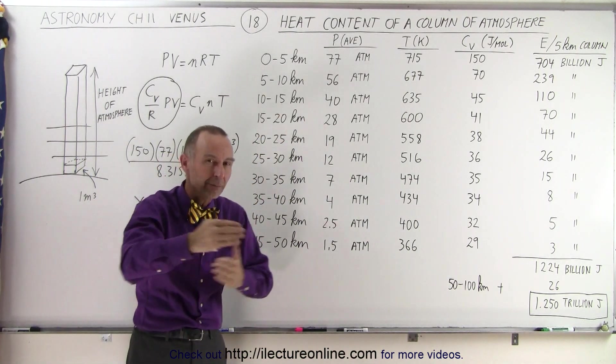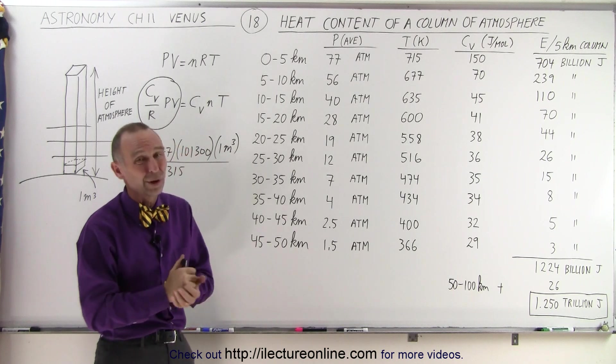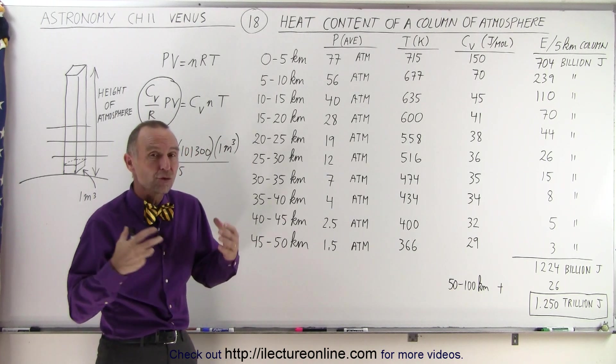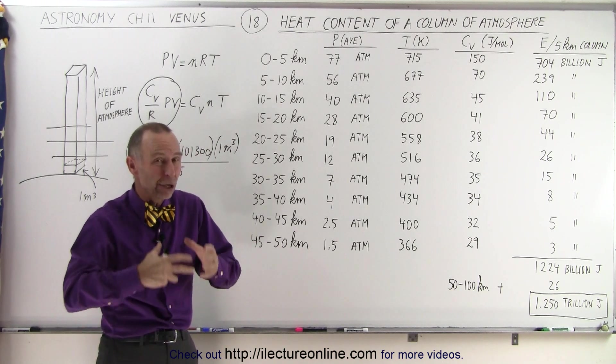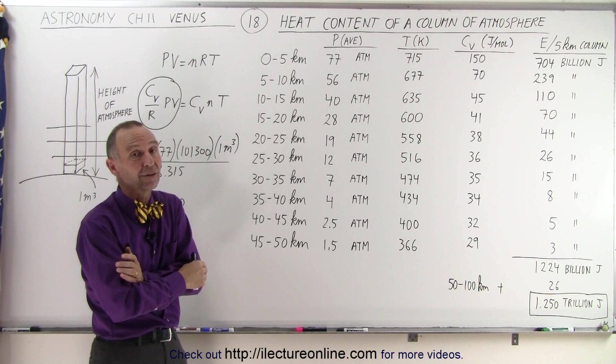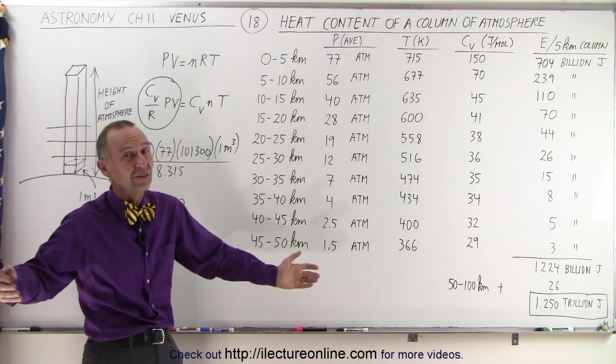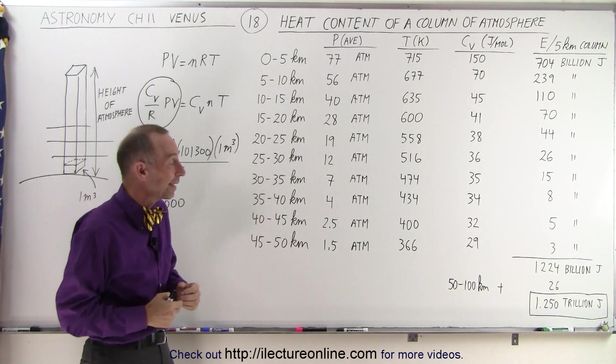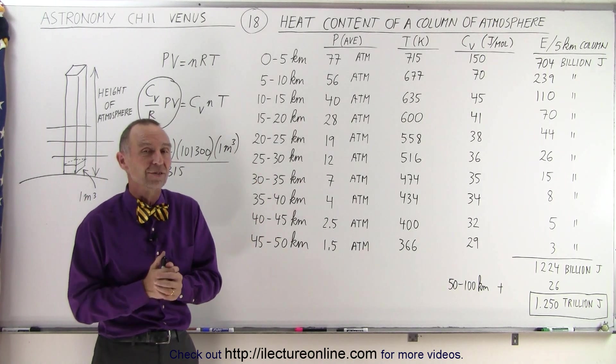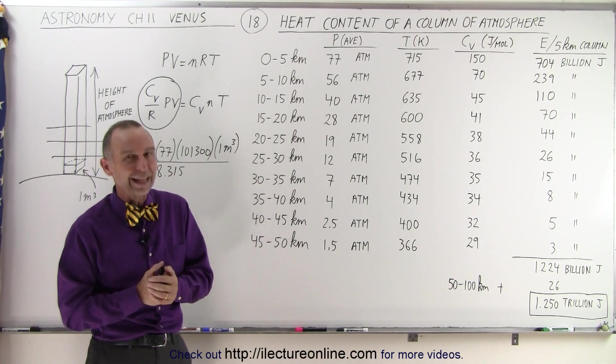That's a column that has a cross-sectional area of 1 square meter. Over a trillion joules of energy. That's an enormous amount of energy. Now we have to multiply that over the entire surface of Venus, and we'll get the total heat content in the entire atmosphere of Venus. That will be done on the next video. Thank you.